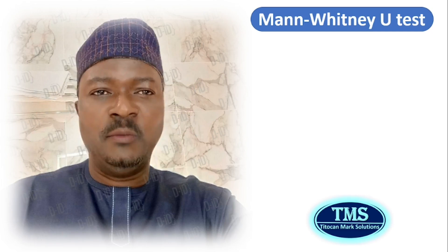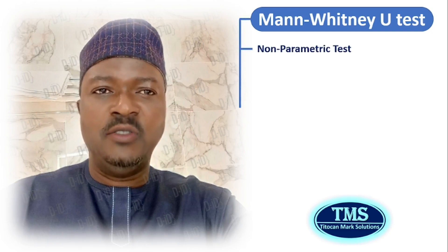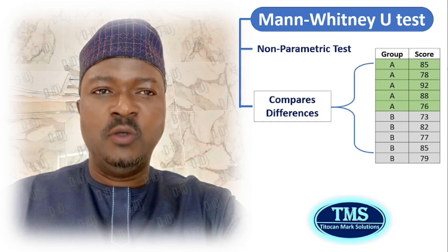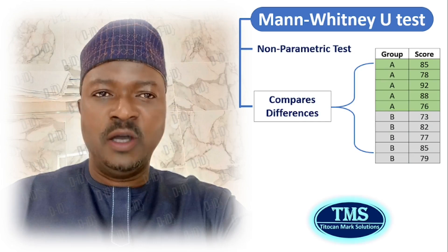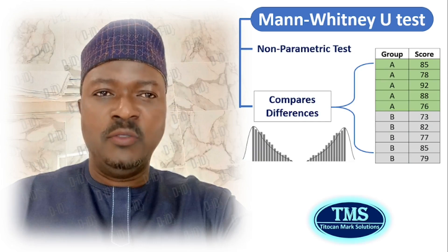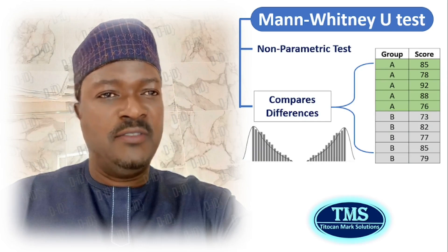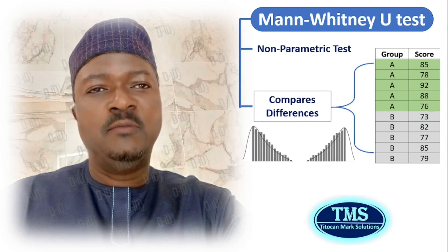The Mann-Whitney U-Test is a non-parametric test that is used to compare differences between two independent groups when the dependent variable is either ordinal or continuous, but not normally distributed. Basically, the Mann-Whitney U-Test assesses whether the distributions of the two groups are different.